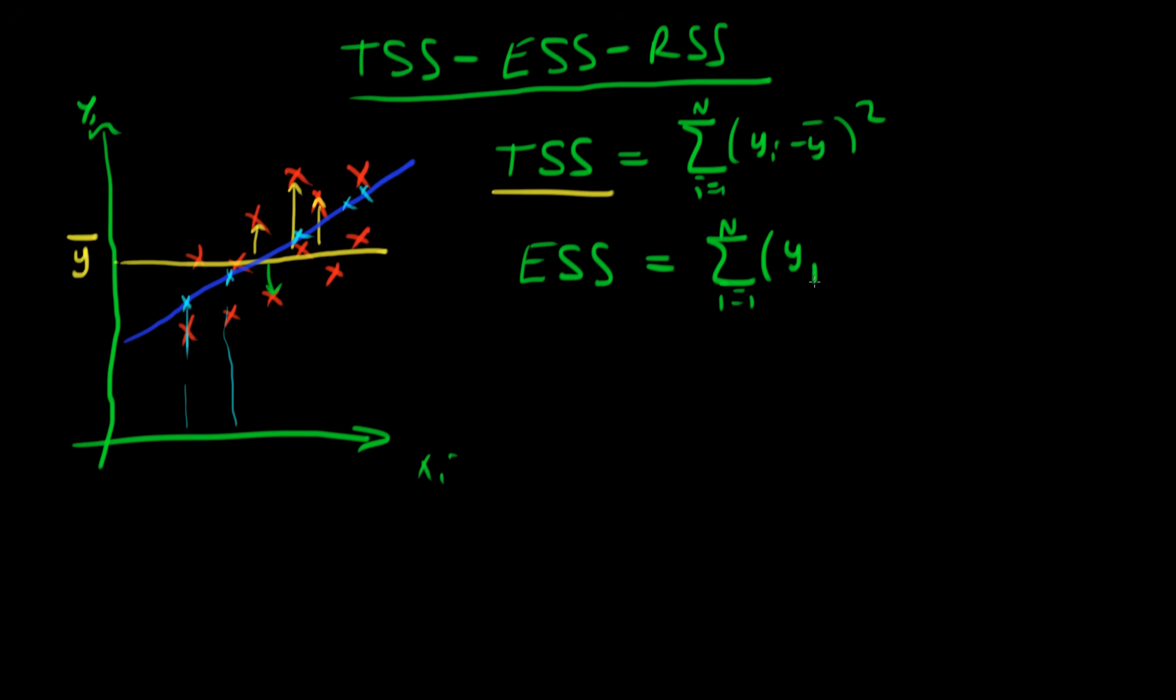So this is what we call the explained sum of squares, because this is the amount of variation in y which our model explains.